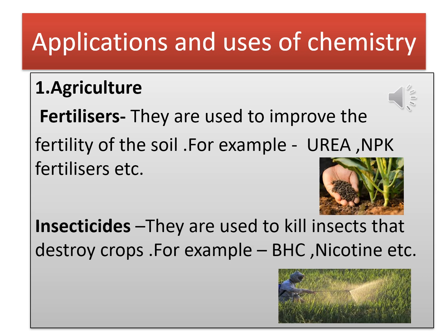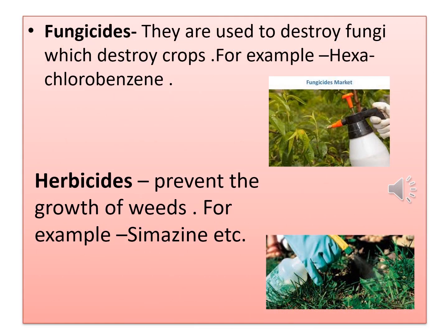Second is insecticides. Insecticides are used to kill insects that destroy crops. The chemical used in the formation of insecticides is BHC or nicotine. After fertilizers and insecticides, fungicides and herbicides are also used in the field of agriculture.